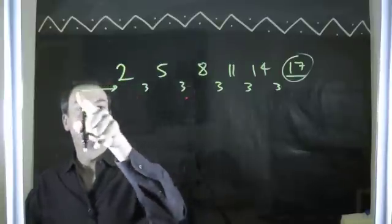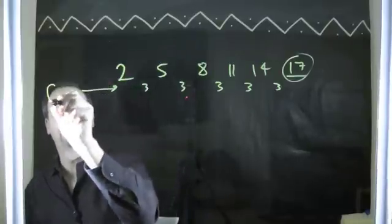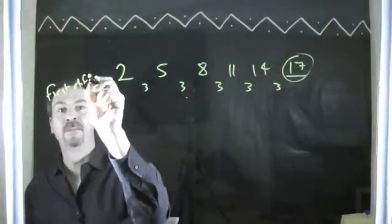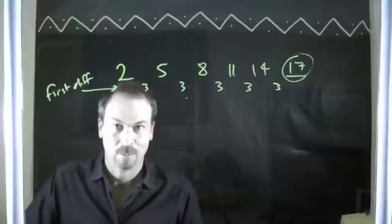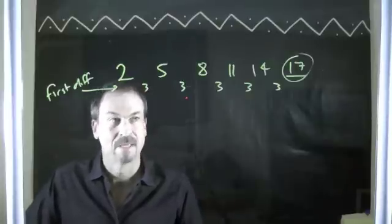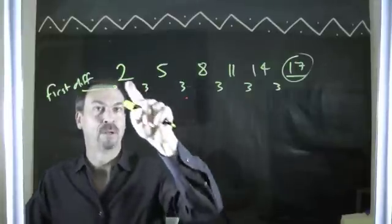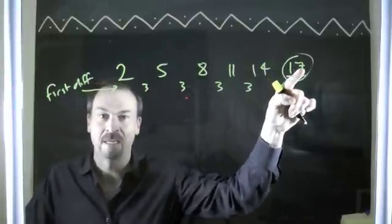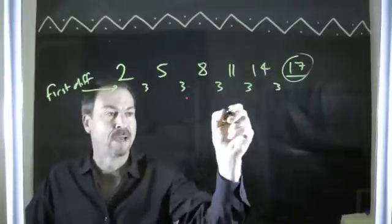Now, a sequence with constant first differences are called linear sequences. And it kind of makes sense. If I was to actually plot this sequence 2, 5, 8, 11 on a graph somehow...